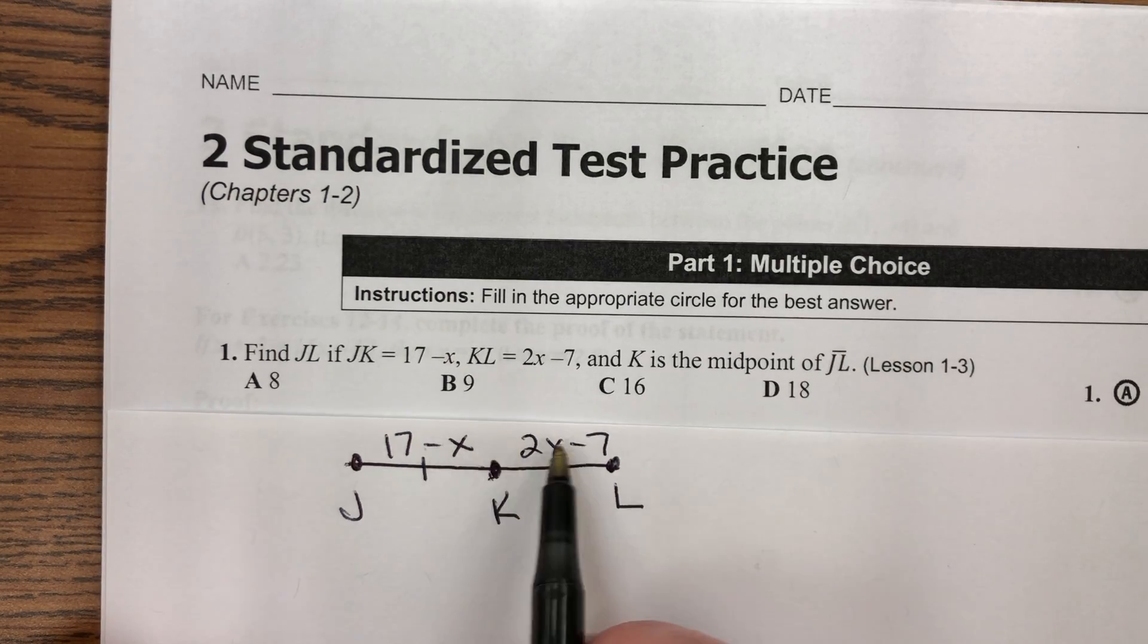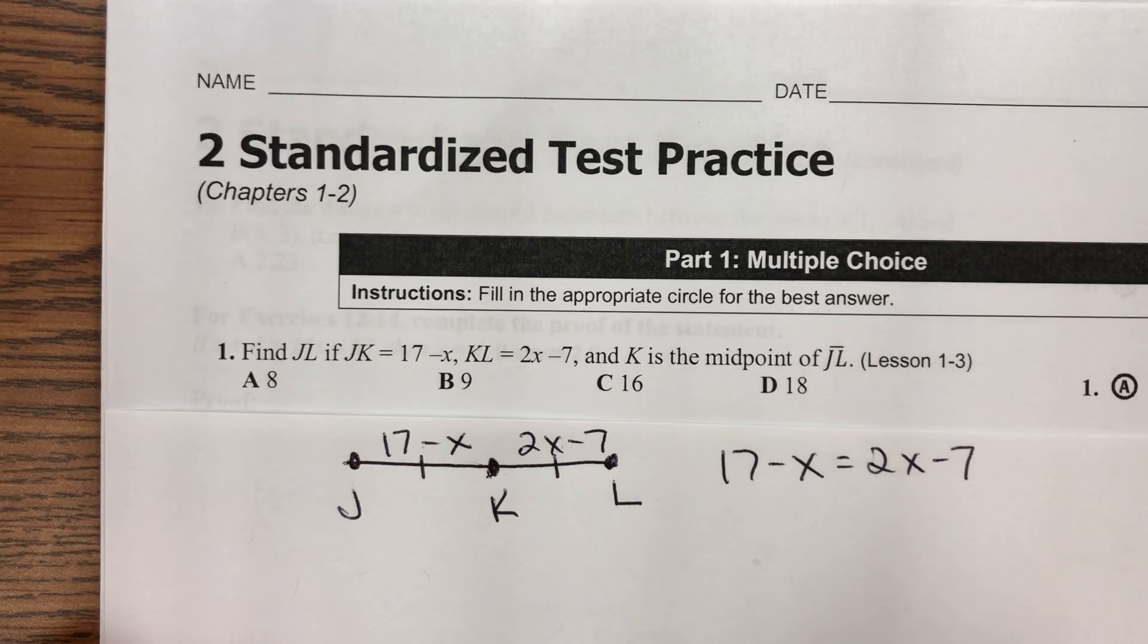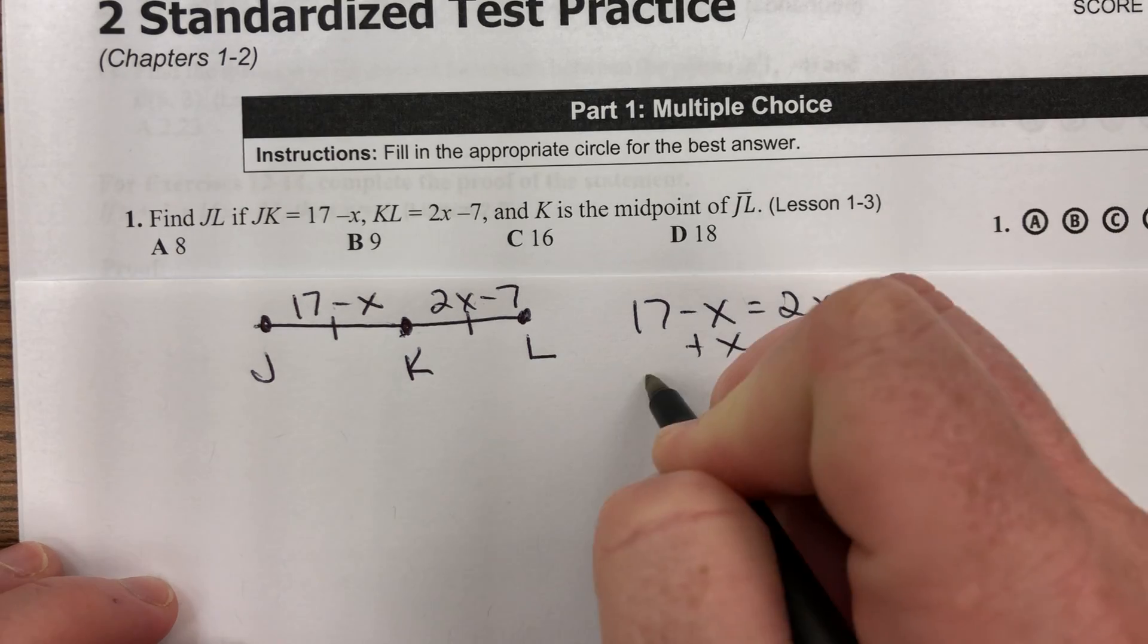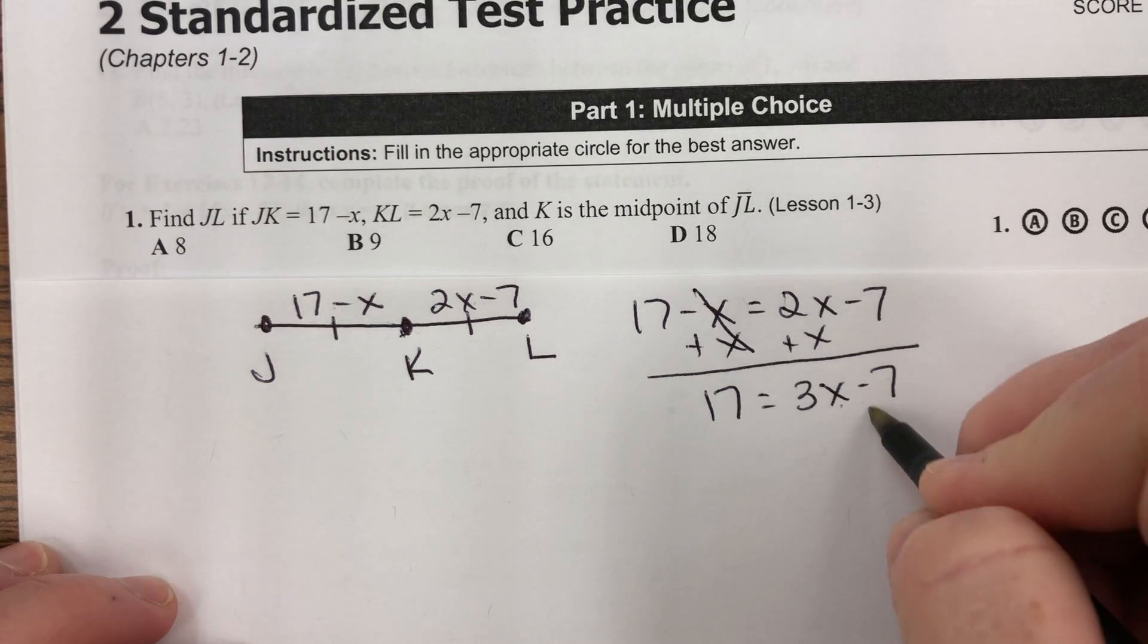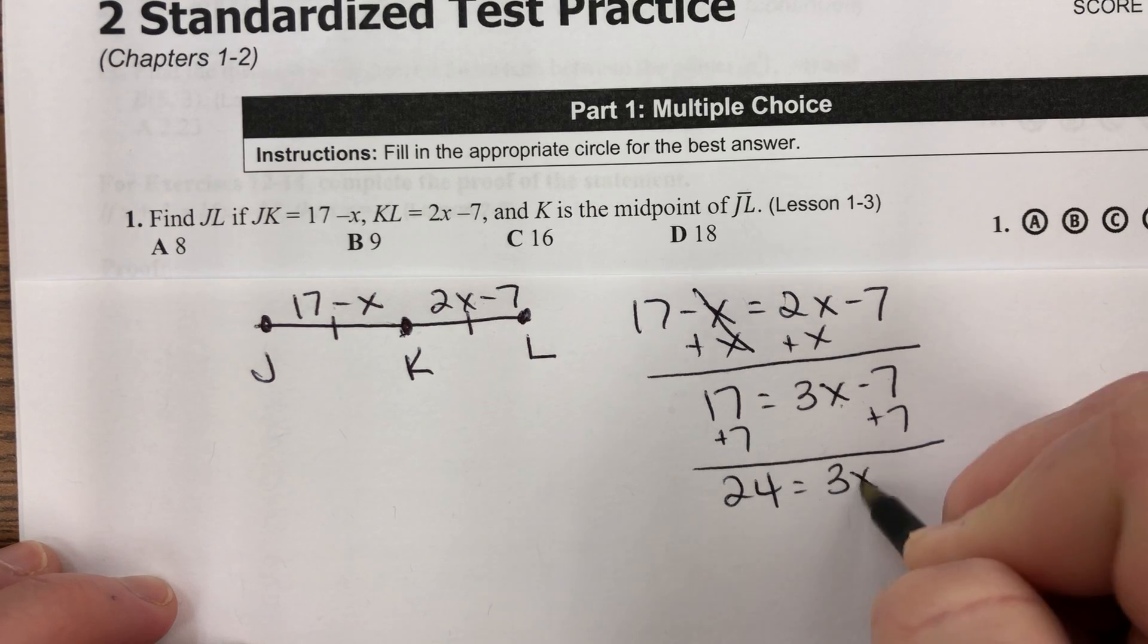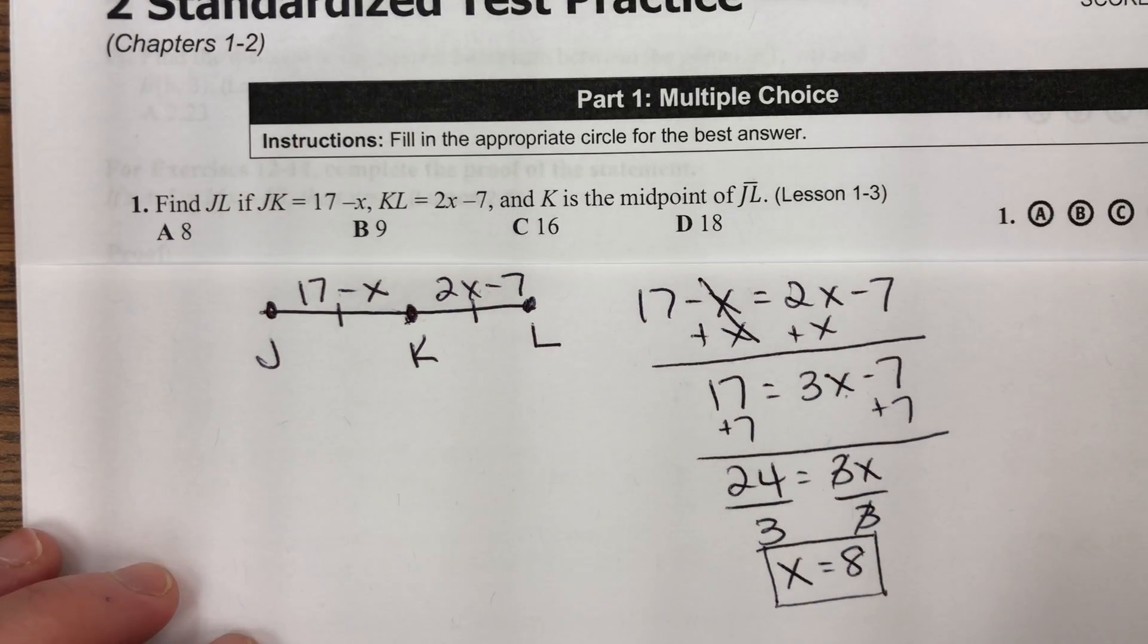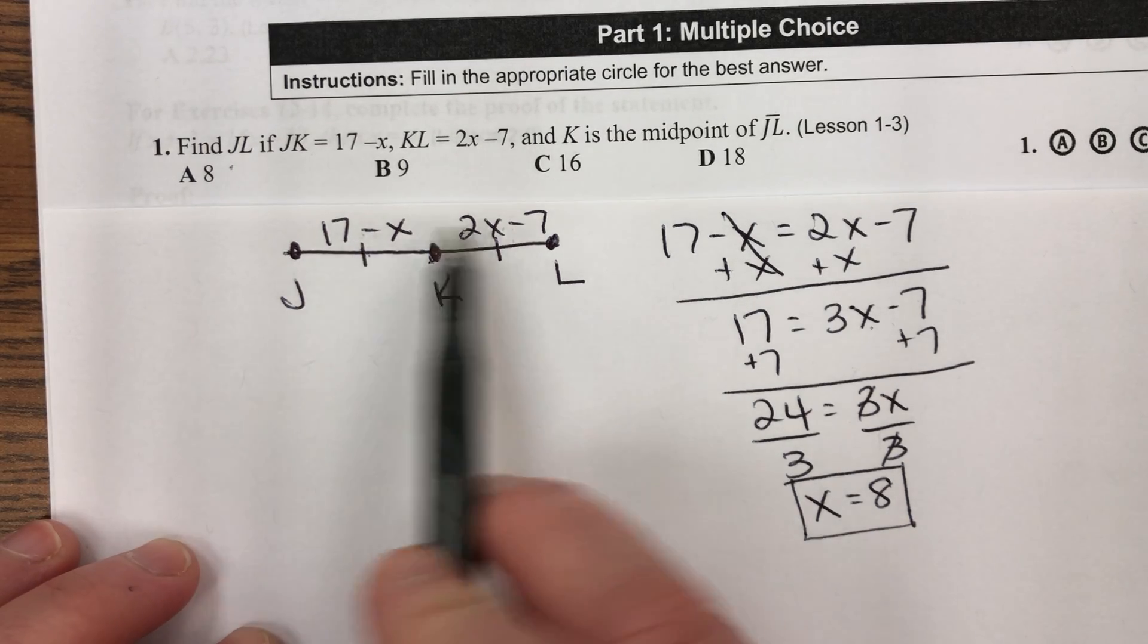So first thing I'm going to do is set these equal to each other and solve for X. 17 minus X equals 2X minus 7. This is just algebra. Get rid of the smallest X. These go away. 17 equals 3X minus 7. Now I have to get X alone. 24 equals 3X. And then lastly, I need to divide both sides of my equal sign by 3, and I get 8 equals X, or X equals 8.